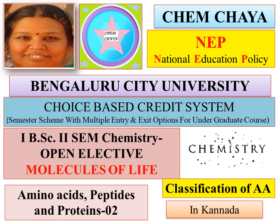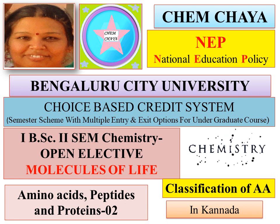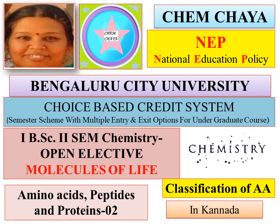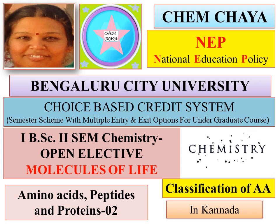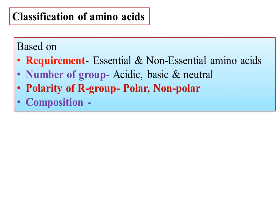So, there is a connectivity sequence: 1, 2, 3. This covers amino acids, peptides, and proteins. This is the 2nd video; the first video is the introduction to proteins. This is the classification of amino acids. Welcome to Chemchaya — subscribe and share. The last video covered amino acids.